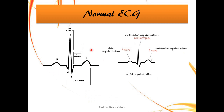Now looking at the ECG waveform: this baseline is also called the isoelectric line. There are positive deflections (upward) and negative deflections (downward). The P wave is a positive deflection, Q wave is a negative deflection, R wave is a sharp positive deflection, S wave is again a negative deflection, and then you have the T wave.